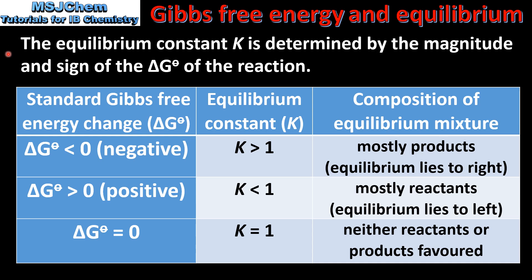To summarize: the equilibrium constant K is determined by the magnitude and sign of the standard Gibbs free energy change. For a spontaneous reaction where ΔG° < 0, K will be large and the equilibrium lies to the right, favoring products. For a non-spontaneous reaction where ΔG° > 0, K will be less than one and the equilibrium lies to the left, favoring reactants. Finally, if ΔG° = 0, then K = 1 and neither reactants nor products are favored at equilibrium.